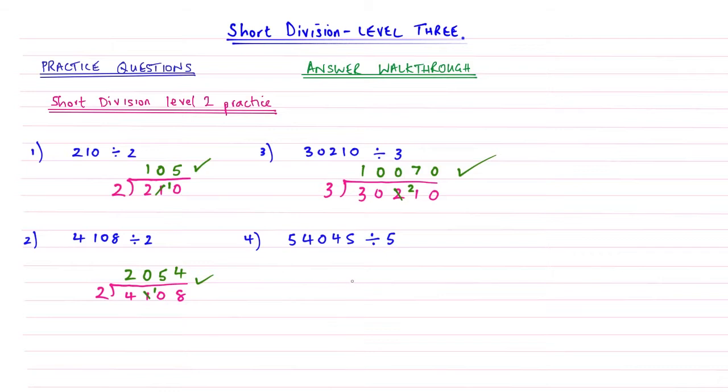Last but by no means least, example number 4. Curly brace and line time. 5, 4, 0, 4, 5, making sure I'm leaving space so I can do my carrying if I need to, then dividing this by 5, and we go through each question in turn.